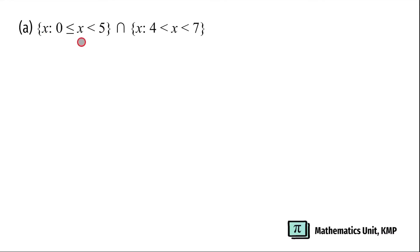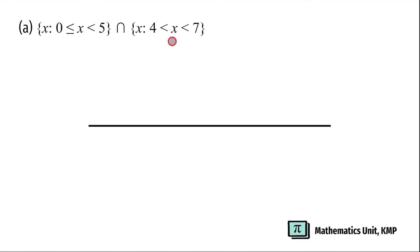The first set is x such that x is greater than or equal to 0 and x is less than 5, intersect with x is greater than 4 and x is less than 7. Now let's draw a number line. On top of 0, we're going to put a closed circle, and on top of 5, we're going to put an open circle and connect these two circles with a straight line.